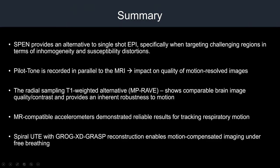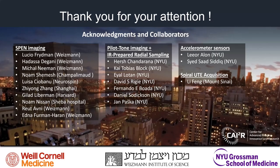In summary: SPEN imaging can be an alternative to single-shot EPI particularly in challenging body regions. The Pilotone, with its small dimensions, high sampling rate, and minimal MRI interface, offers a great way to resolve respiratory motion. We also proposed MPRAVE, a novel radial sampling sequence for brain imaging; the use of MR-compatible accelerometers for reliable respiratory motion tracking; and a motion-corrected approach for lung imaging based on spiral UTE. I want to thank all of my colleagues who contributed to this work.